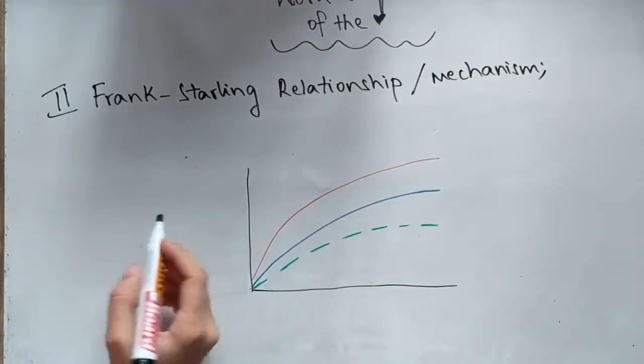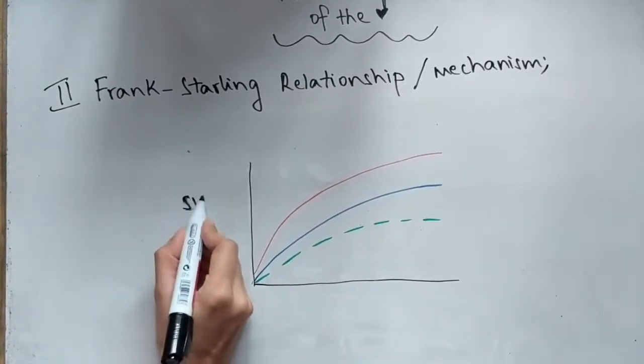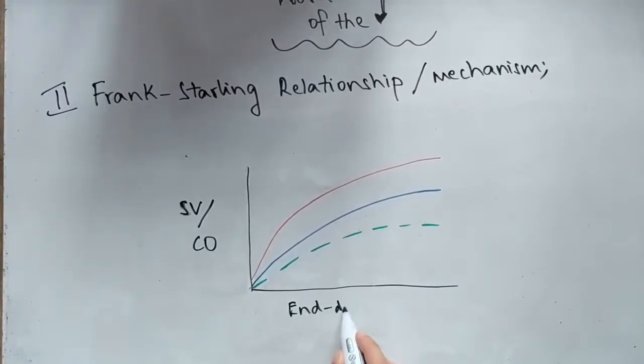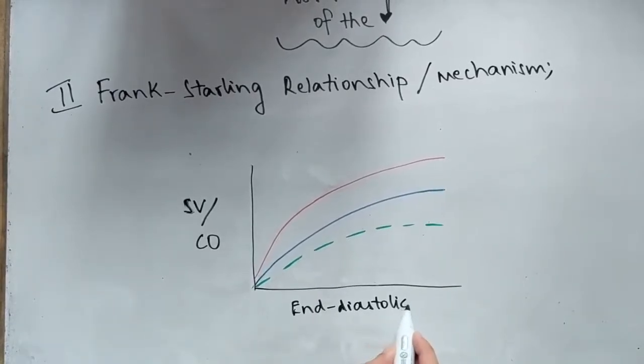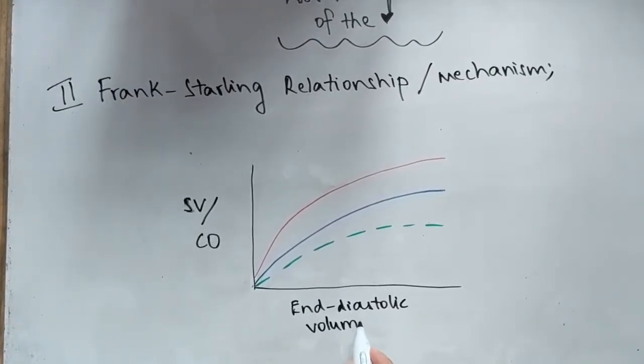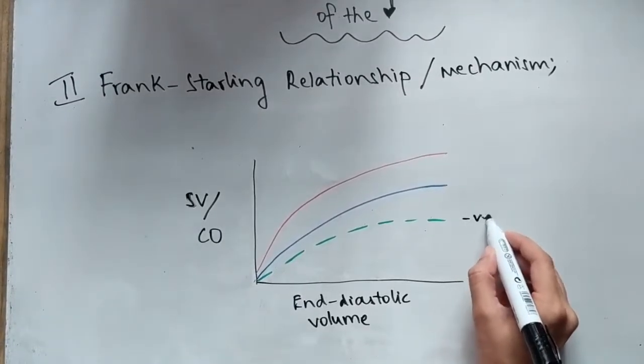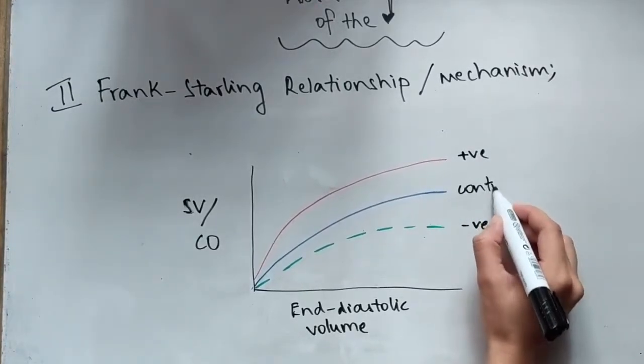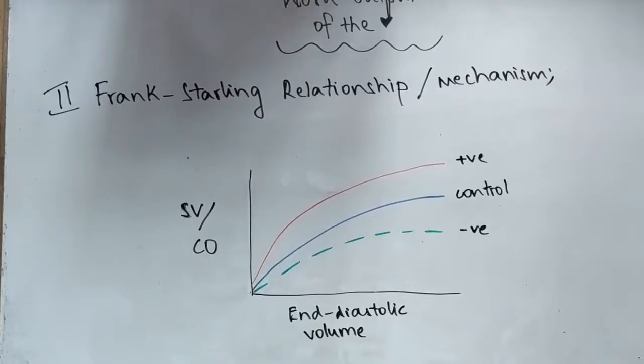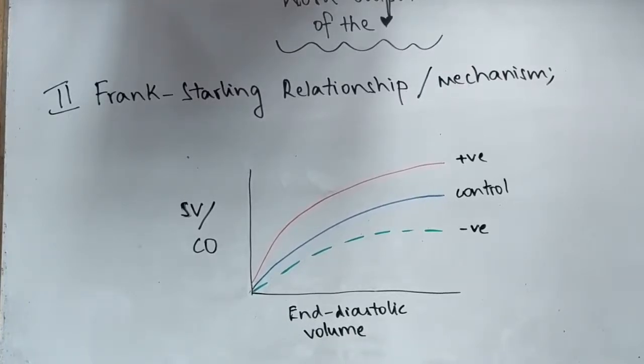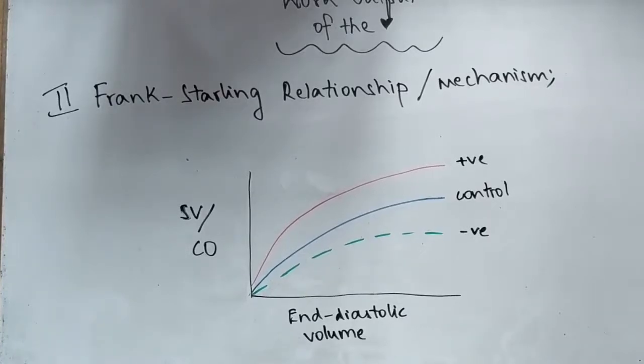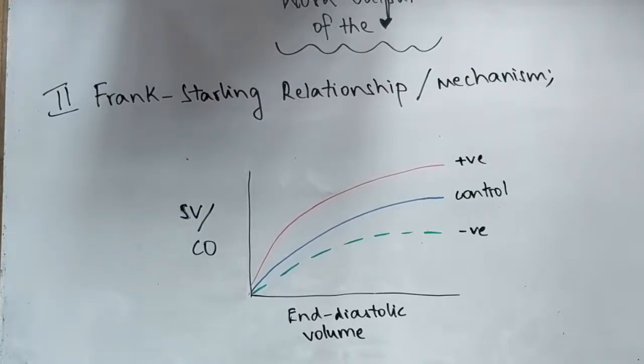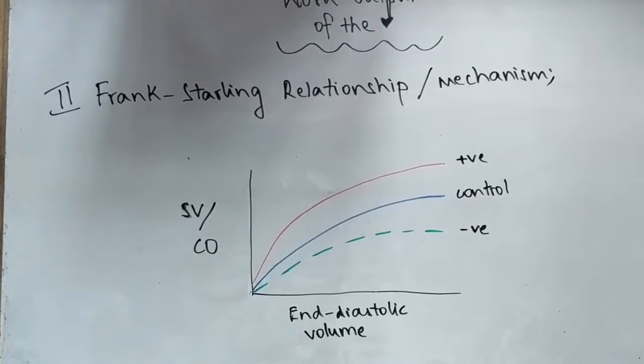This is a graph showing the Frank-Starling relationship and the effect of positive and negative inotropic agents on the mechanism. We've got the y-axis with the stroke volume or cardiac output, and the x-axis with the end-diastolic volume. The green line represents the negative inotropic effect, the red one is the positive, and the blue one is the control, which is the normal mechanism of the heart. You can see that the positive inotropic effects increase the contractility of the heart and the cardiac output, while the negative ones decrease it.